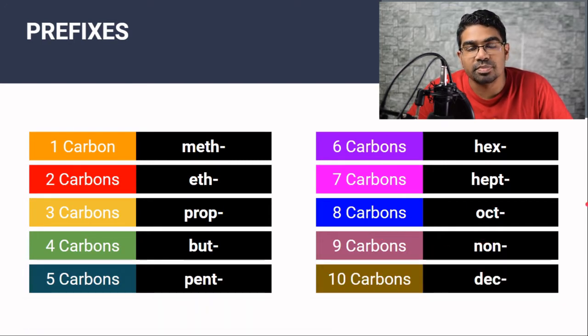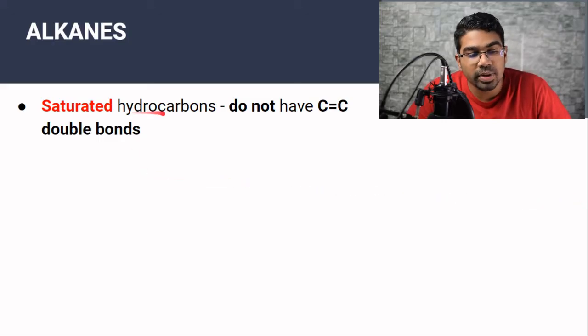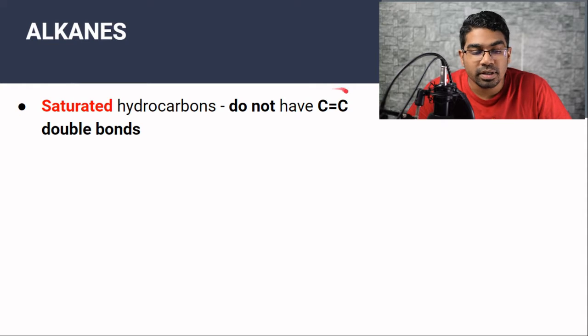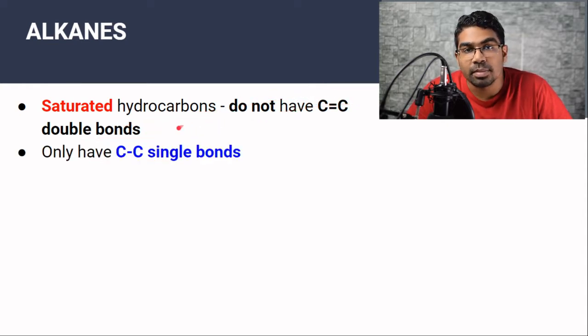Once you're familiar with all these prefixes, the naming of hydrocarbons becomes very easy. Alkanes are called saturated hydrocarbons. The reason they're called saturated is because they do not have any carbon-carbon double bonds (C=C double bonds) — they only have carbon-carbon single bonds.